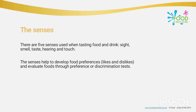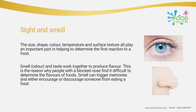The senses help to develop food preferences — likes and dislikes — and evaluate foods through preference or discrimination tests. The size, shape, color, temperature, and surface texture all play an important part in determining the first reaction to a food. Smell, also called odor, and taste work together to produce flavor, which is why people with a blocked nose find it difficult to determine the flavor of foods.